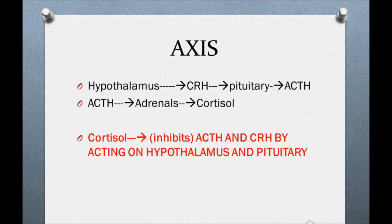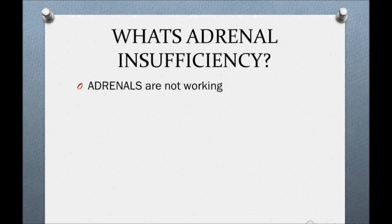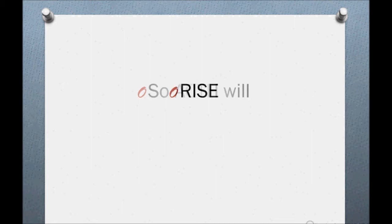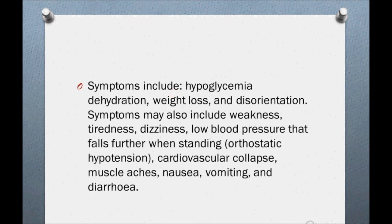In primary adrenal insufficiency, the defect lies in the adrenals. When there is a defect in the adrenals, cortisol is not secreted, so the ACTH level will increase. Since cortisol and steroids have many functions in glucose and other metabolisms, we see a variety of symptoms.